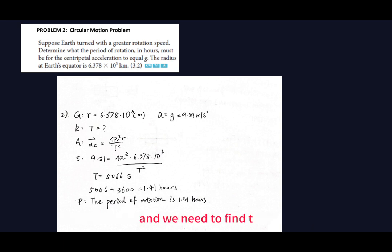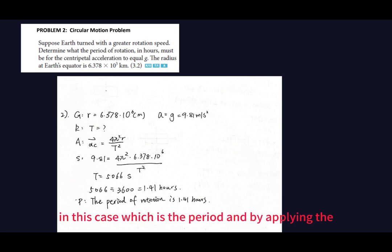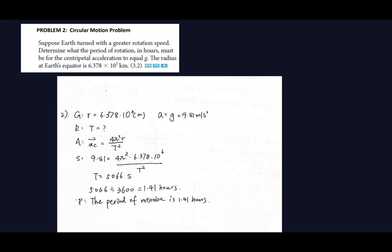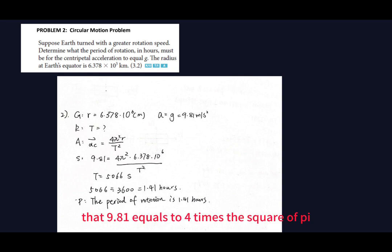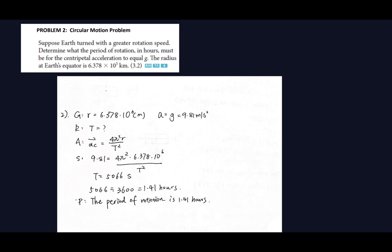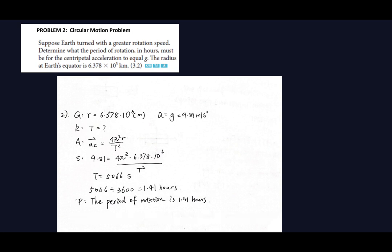We need to find T, the period. Applying the centripetal acceleration formula: a_c equals 4 times pi squared times radius divided by T squared. Substituting values: 9.81 equals 4 times pi squared times 6.378 times 10 to the power of 6, divided by T squared. After calculation, T equals 5066 seconds. We then convert to hours by dividing 5066 by 3600.